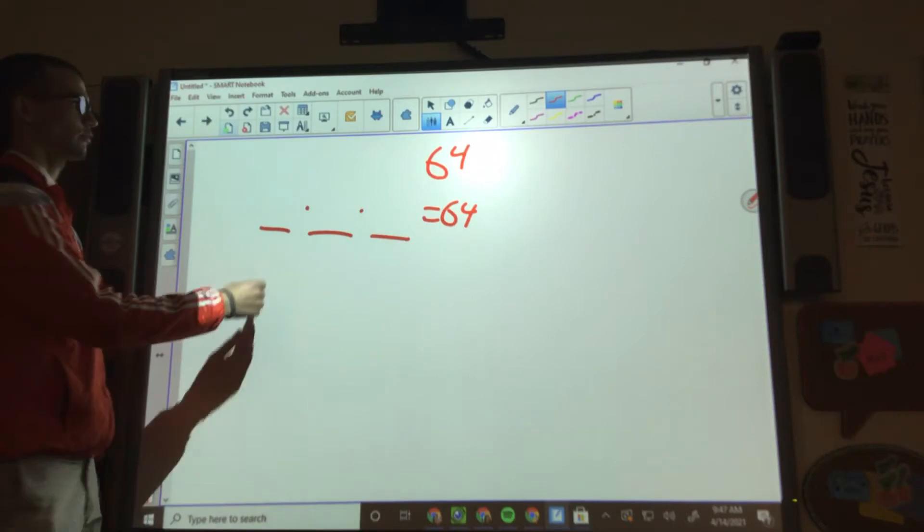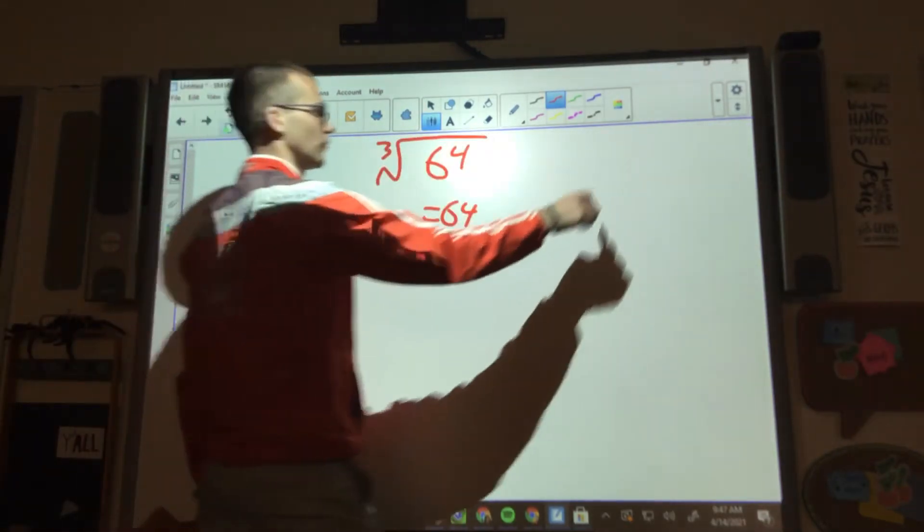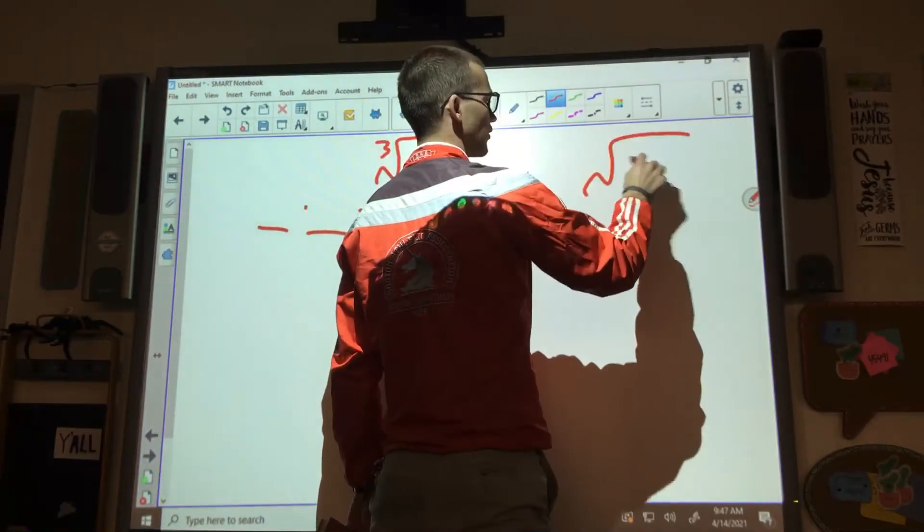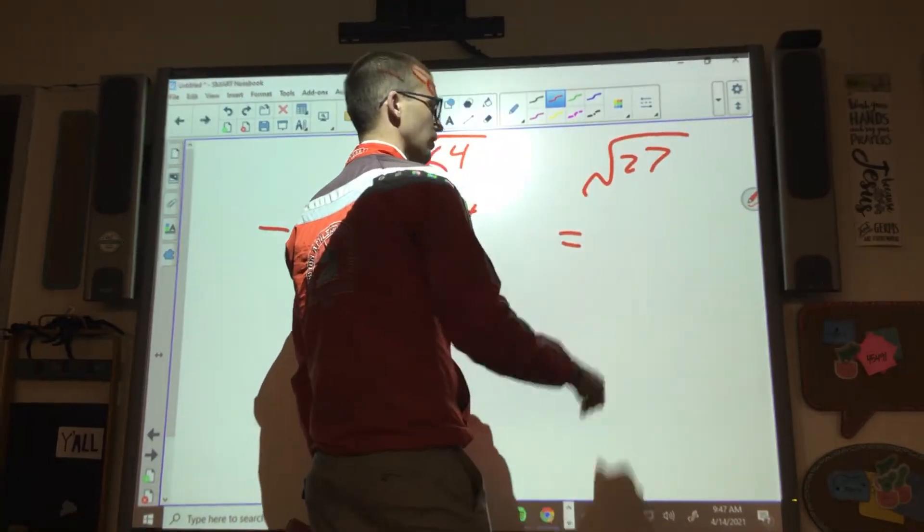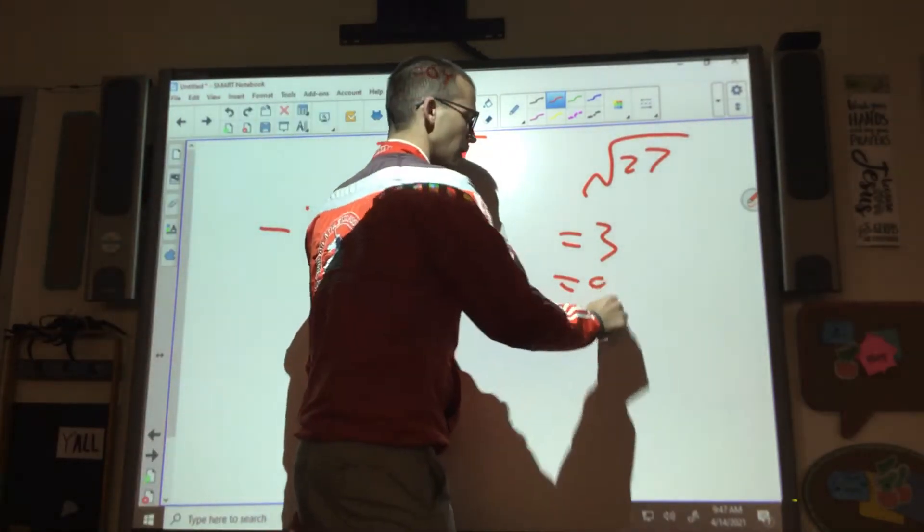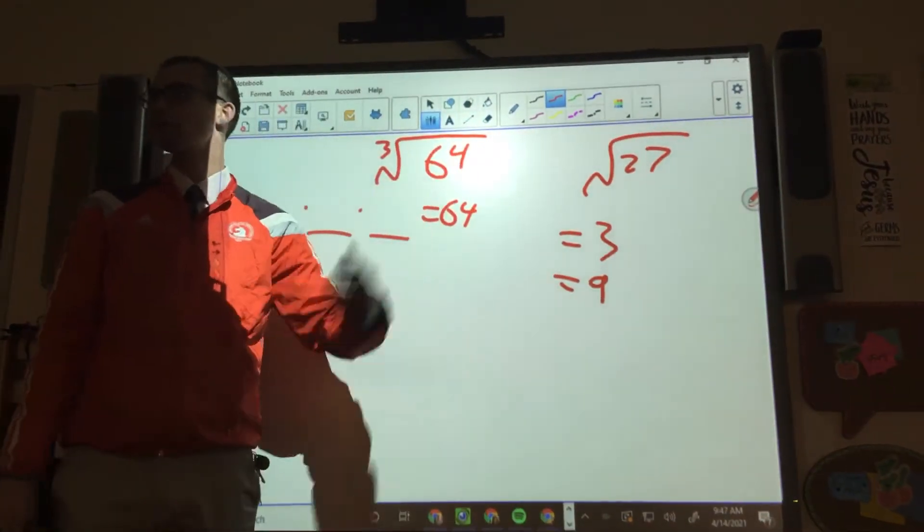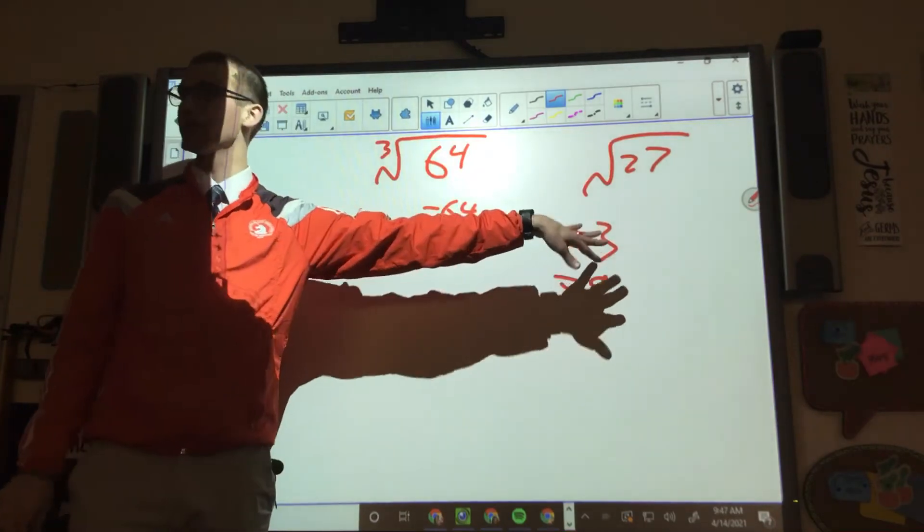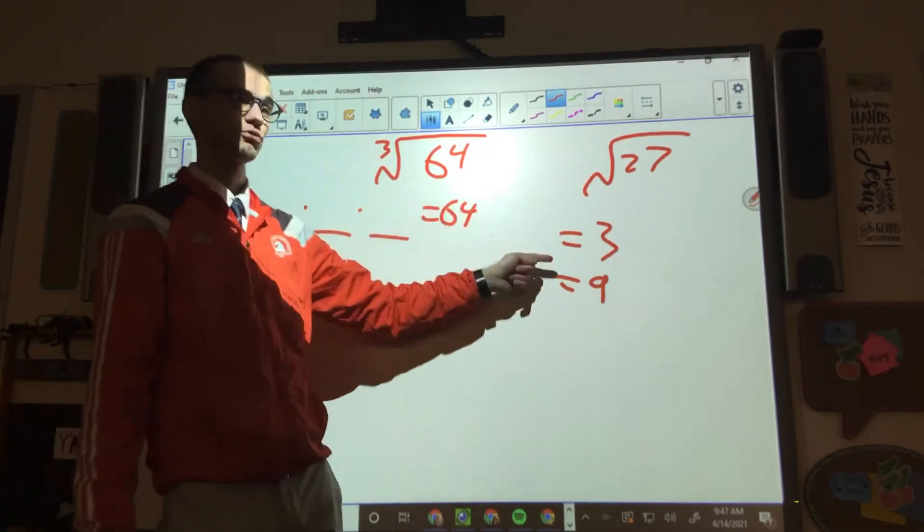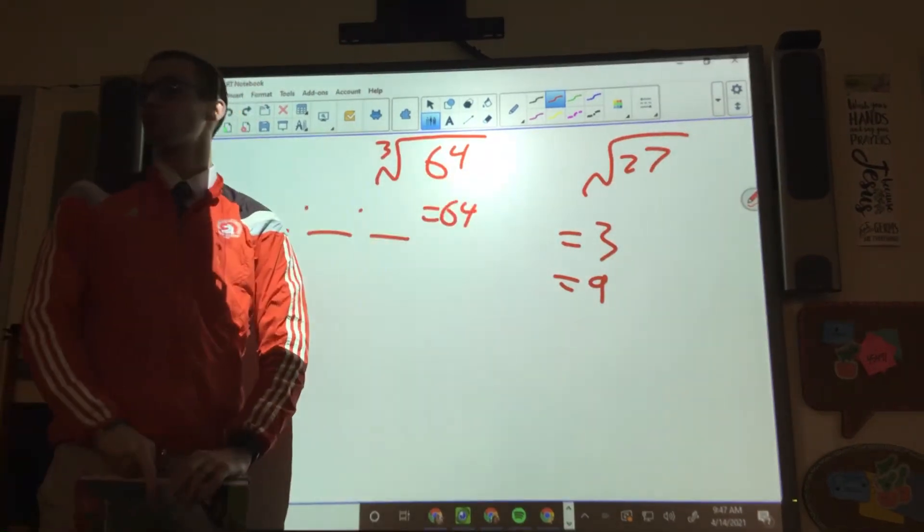Because otherwise, when I say, so this is the cube root of 64. When I say what's the cube root of 27, some of you are going to write down three, some of you are going to write down nine, because you're like, hey, nine and three both go in there. Now three is the right answer, but not because it's three times nine. It's the right answer because three times three times three equals 27.